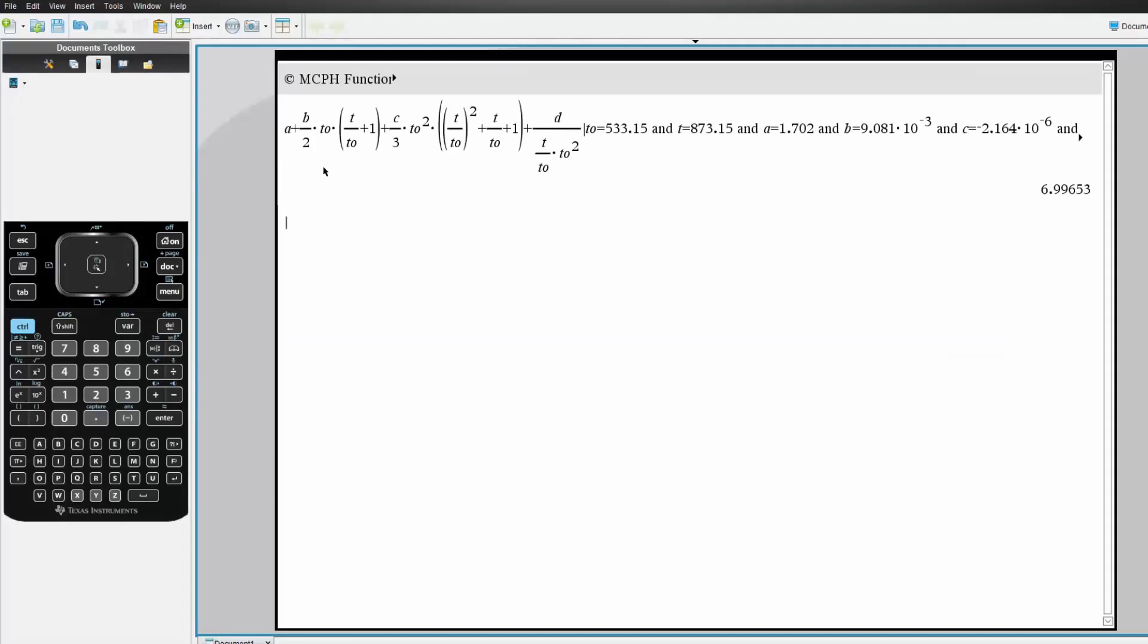Here I have the function. The main points you need to do is write what you have. So, you have A plus B over 2 times T0, the original temperature, times parentheses, the final temperature over T0.